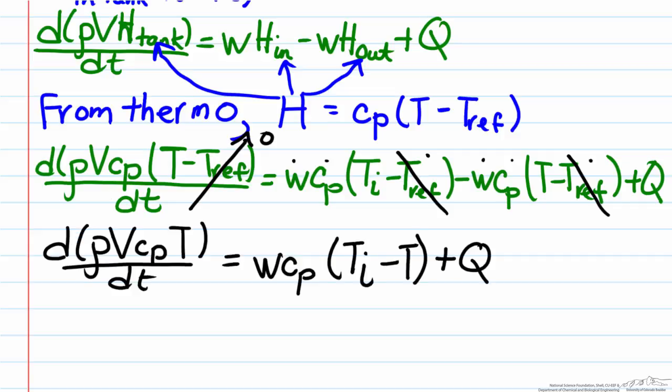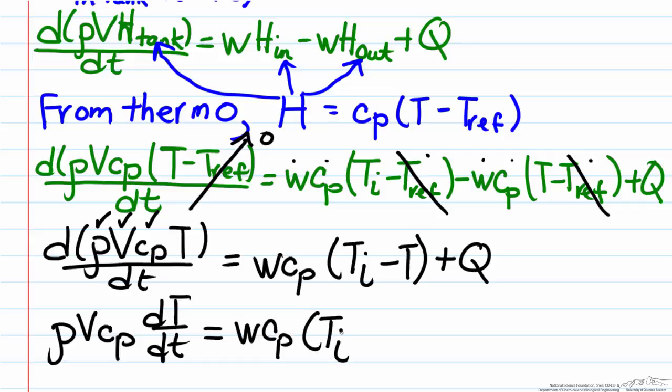The last step here is to take out a few constants out of the derivative. The problem statement stated that ρ and heat capacity were constants, and based on our mass balance we know that the volume is a constant. So therefore we can take all those out of the derivative to get us to our final answer, which is that ρVc_p dT/dt equals wc_p multiplied by the difference between the inlet temperature and the outlet temperature, which is also the tank temperature, plus Q.